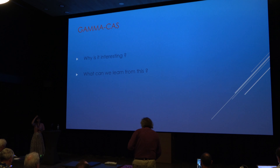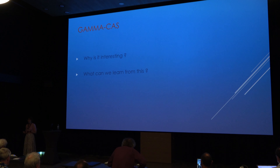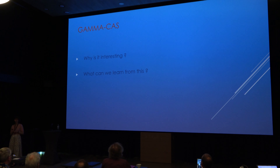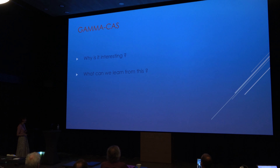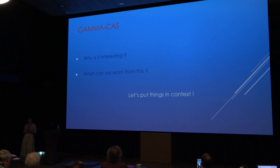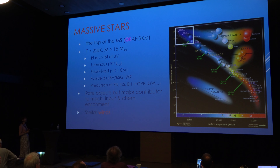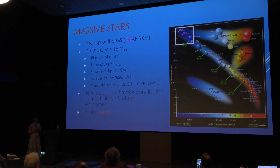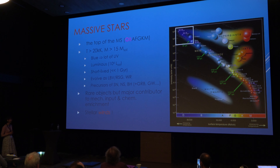There are of course two questions about these objects: why is it interesting, and what can we learn? To answer those questions I need to put things into context. So let's begin with the massive stars. I'm working on O stars and a little bit on B stars, and their evolved descendants — LBV, Wolf-Rayet, and so on.